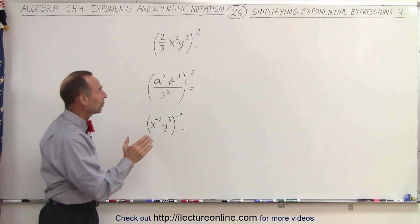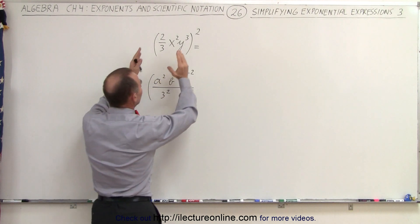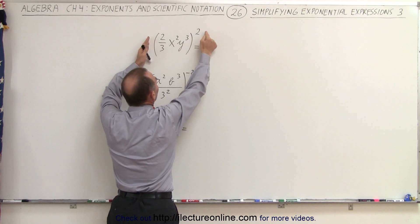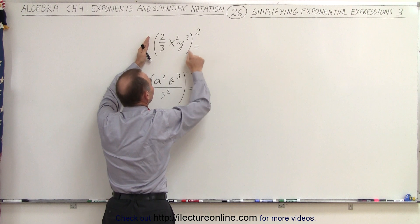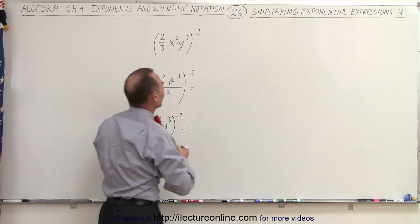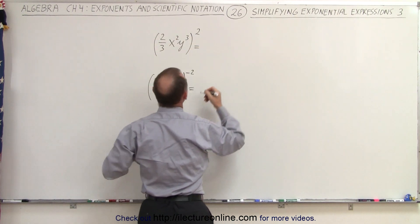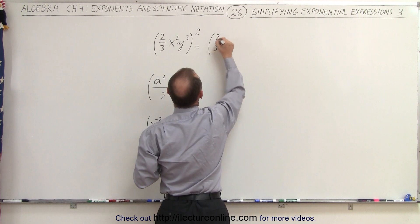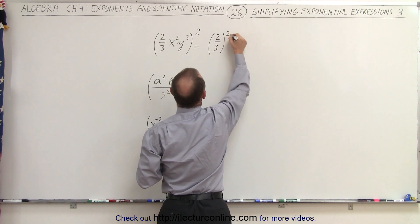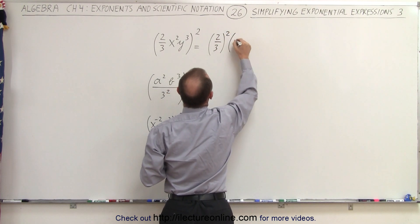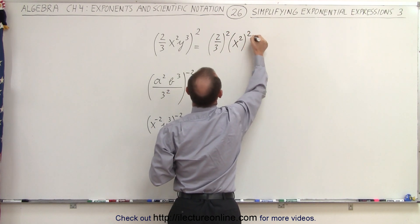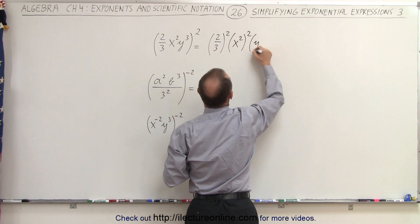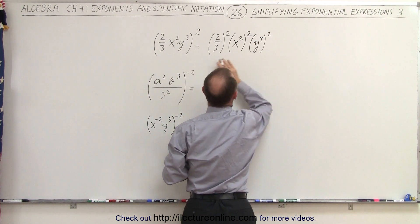Whenever we have something in parentheses raised to some exponent, it applies to everything inside the parentheses. In other words, this is equal to the quantity 2 thirds to the second power, times x squared to the second power, times y cubed to the second power.